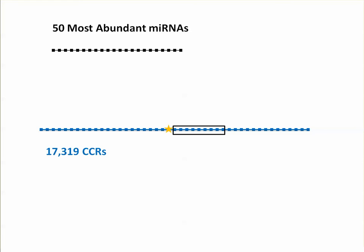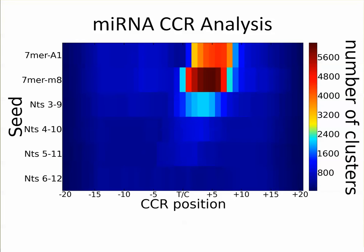My first year in grad school, I saw this Hafner et al. dataset and had no idea what a FASTQ file was or where to download RNA data, but I figured it out. I wrote a bunch of Python scripts, made some regular expressions, and found the most abundant microRNAs. Then I downloaded the 17,000 CCRs from Hafner et al., tested different seed regions of these microRNAs, and scanned the CCRs — using the reverse complement of the seed — and came up with this image.